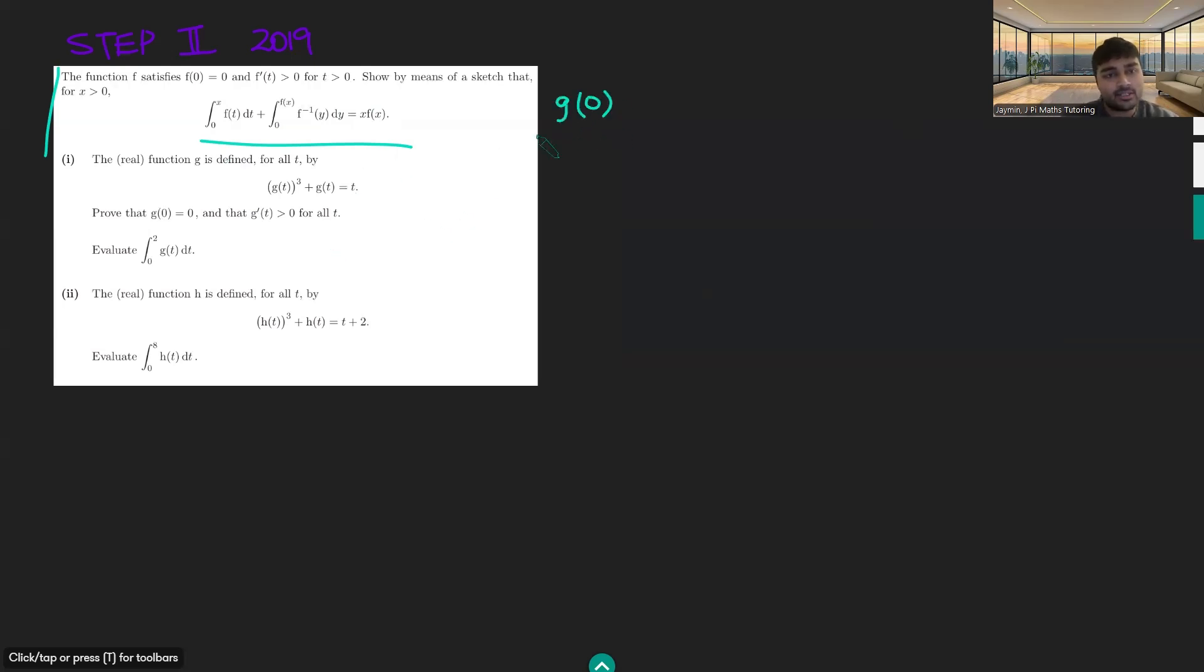g(0), well, let's just plug in t = 0 into this equation. That seems like the obvious thing to do. We get g(0)³ + g(0) = 0. And if we factor out g(0) from the left-hand side, we get this. And now since g(0) is a real number, when you square it, it's going to be non-negative. So if you add one, this thing here is going to be positive. So we get that g(0) must be zero. Great.